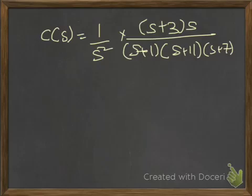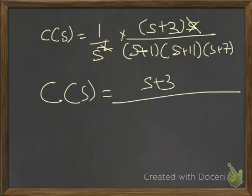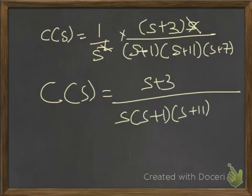I am going to substitute 1/s² in place of R(s). You can cancel one s from the numerator with one s from s², so C(s) becomes (s + 3) · s divided by s · (s + 1)(s + 11)(s + 7), effectively reducing the denominator's power of s.